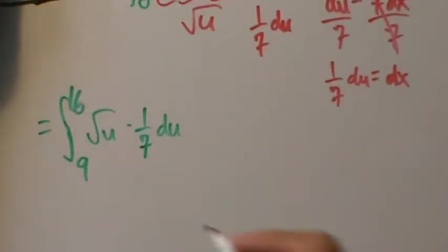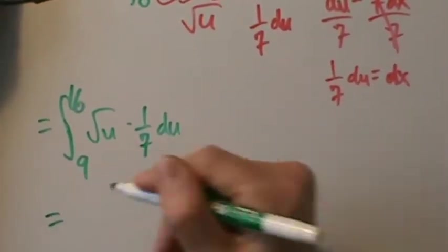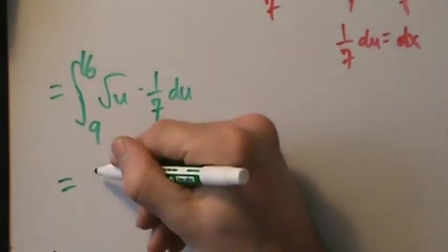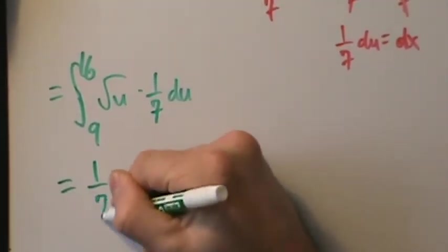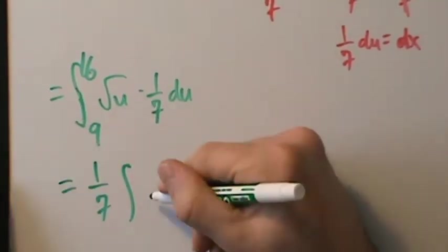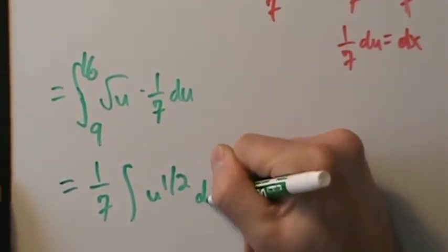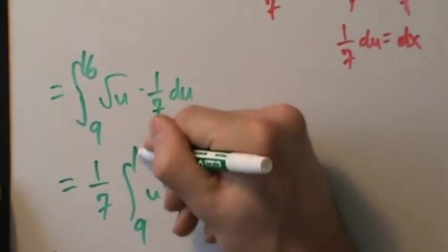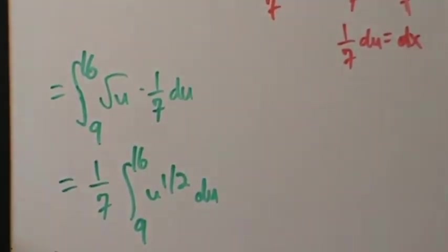Now this is going to be (1/7) times the integral of u^(1/2) du, evaluated from 9 to 16.